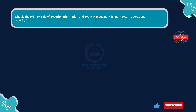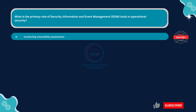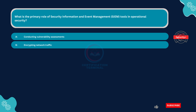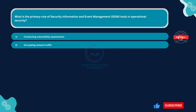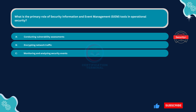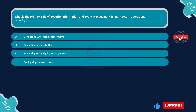Next question. What is the primary role of security information and event management tools in operational security? Option A, conducting vulnerability assessments. Option B, encrypting network traffic. Option C, monitoring and analyzing security events. Option D, configuring access controls. The correct answer is Option C, monitoring and analyzing security events.